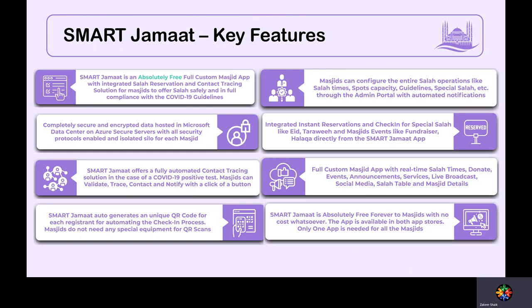Muslim data is very sensitive, so the platform is designed to collect minimal personal data — only name, phone number, and email. Email is needed for automated notifications, phone number because it is a phone app, and name to identify the person. The entire data set from front end to back end is fully encrypted; the Smart Jamaat team does not have physical access to the data.